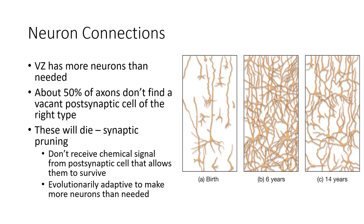We think having more neurons was selected for evolutionarily. It's much more beneficial to have more neurons than you need than fewer. Individuals that had more neurons were more likely to make the connections needed for more complex cognitive behaviors and be more successful overall. They were more likely to survive, function better, and produce offspring. It makes much more sense to have more than needed and let the extraneous ones be pruned through synaptic pruning than to have fewer than what's really needed.